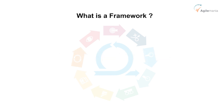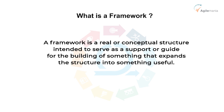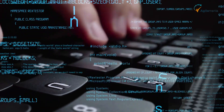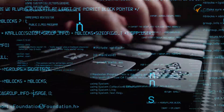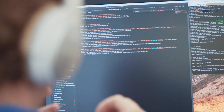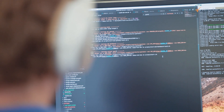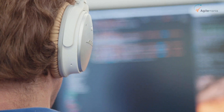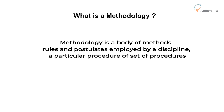So what is a framework? In general, a framework is a real or conceptual structure intended to serve as a support or guide for the building of something that expands the structure into something useful. In the context of software development, it provides a foundation on which software developers can build programs for a specific platform. For example, a framework may include predefined classes and functions that can be used to process input, manage hardware devices, and interact with the system software. And what is a methodology? As per the dictionary, the meaning of methodology is a body of methods, rules, and postulates employed by a discipline — a particular procedure or set of procedures.